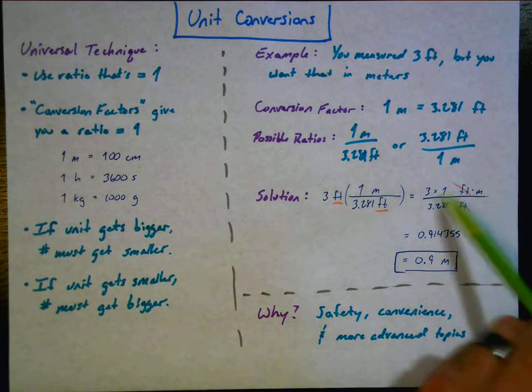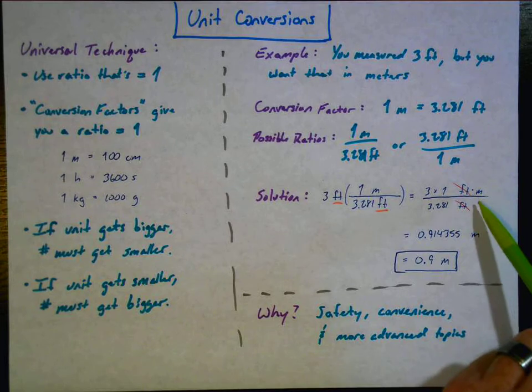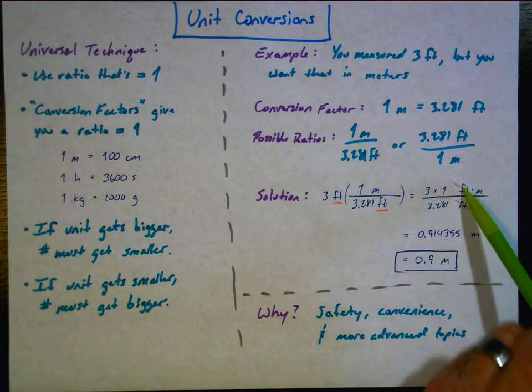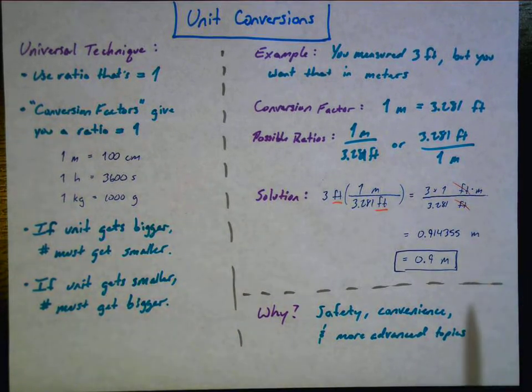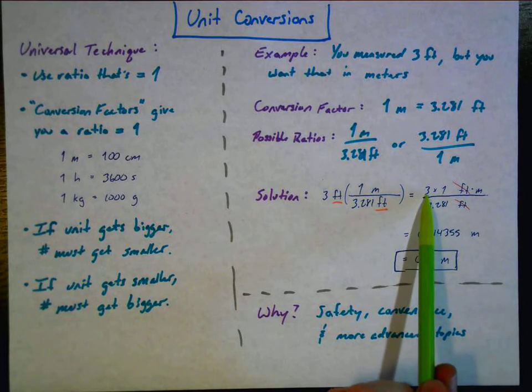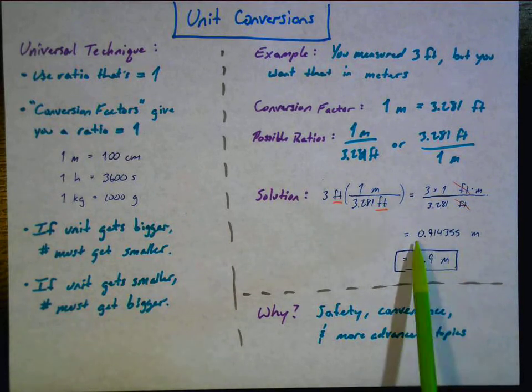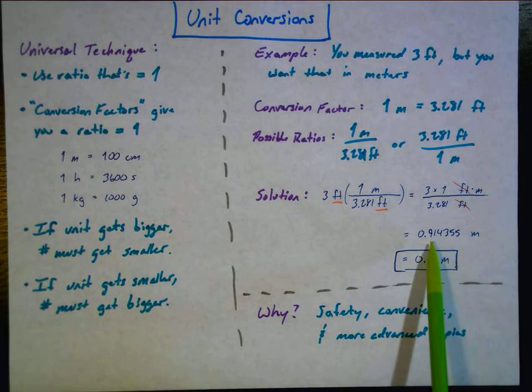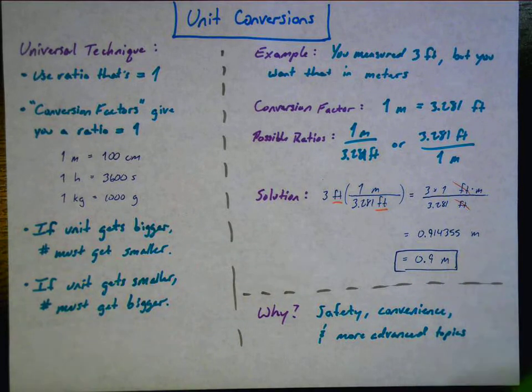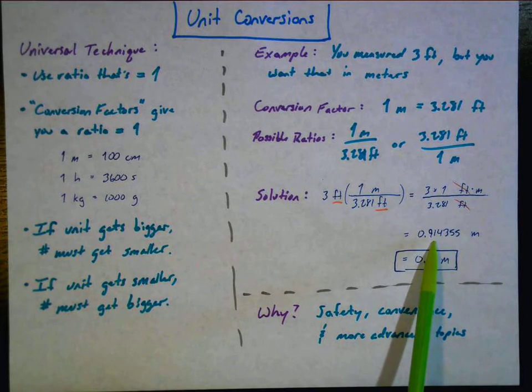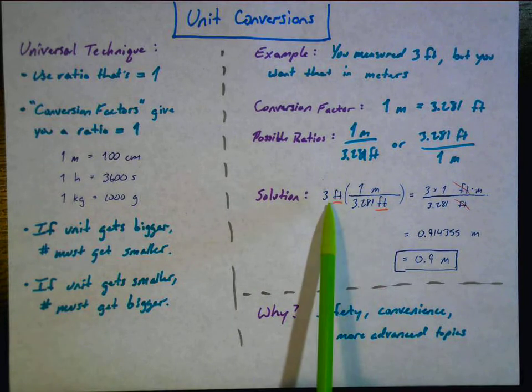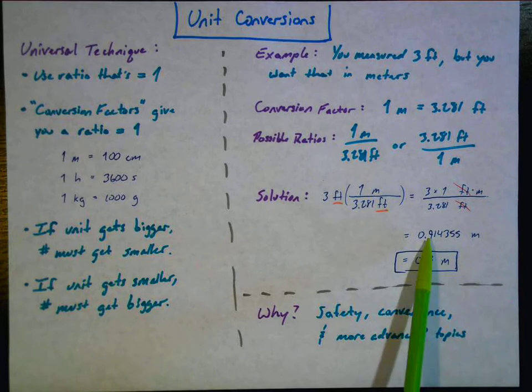And so when I do this, three times this fraction, it's three times one on the top. And then I'm going to divide by 3.281 on the bottom. On the top, it becomes feet times meters for the units. And on the bottom, the units are just feet. Well, feet divided by feet, they cancel out exactly what I want. And there's nothing canceling the meters. Exactly what I want. So I do the math now. Three times one and divide it by 3.281. I get this answer on my calculator. But I know, listen, there's sig figs I have to keep in mind. And so I was doing division. And so I have to round this number to the same number of sig figs as the least precise number I was dealing with. The least precise number was one significant figure. I have to round this answer to one sig fig.